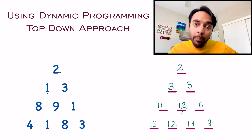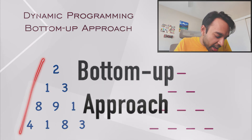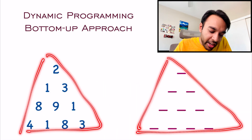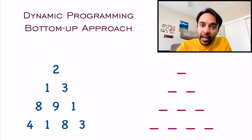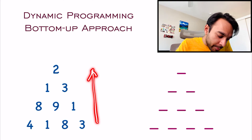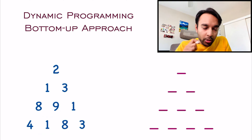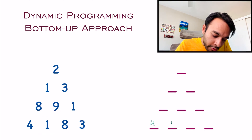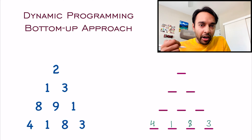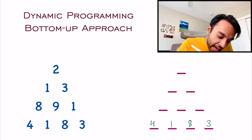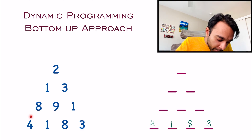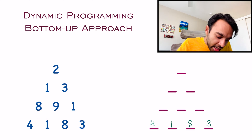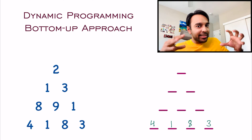Similarly, we can solve this problem using the bottom-up technique. Taking the sample triangle again, with an empty memoization space, when going bottom-up we start with the lower-most row. In the lower-most row I write down 4, 1, 8, and 3. Moving up one level, to determine the values we want the smaller sum. Coming to element 8 from the bottom-adjacent elements 4 and 1, we get either 12 or 9 — since we want the smaller value, we choose 9.